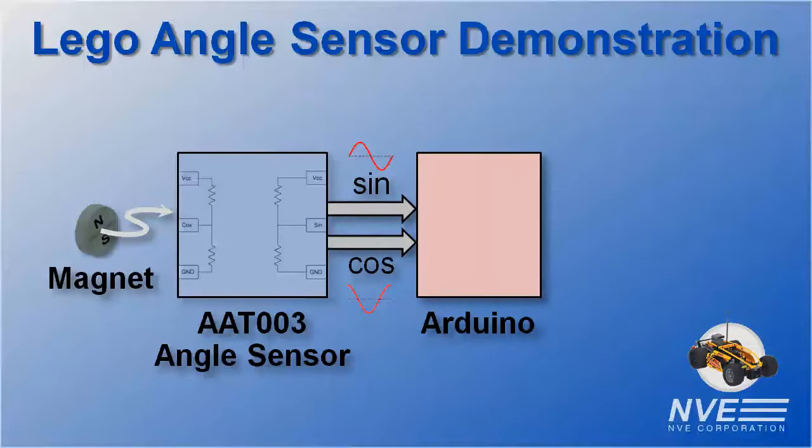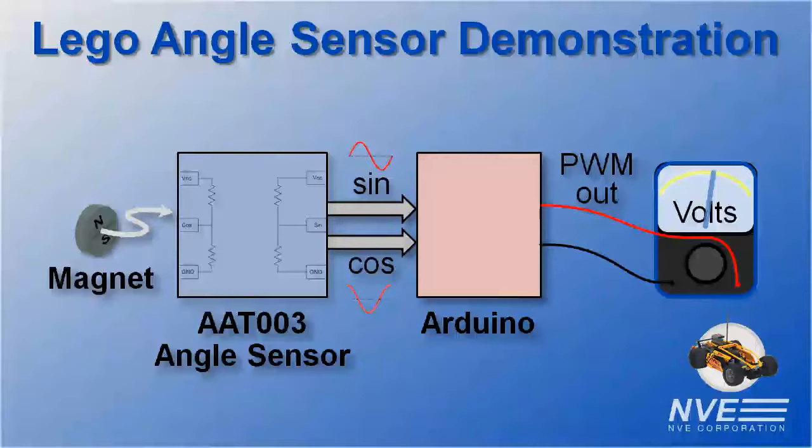We can use an Arduino with a simple program to linearize the sensor outputs. For demonstration purposes, we'll connect a meter to an Arduino PWM analog output to show the angle.